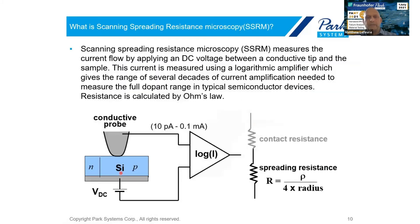On to SSRM. This is much simpler conceptually and theoretically than scanning capacitance. We're simply bringing a conductive probe into contact with the sample, applying a DC bias between the two, and measuring the current that flows. In SSRM, it should be noted that we use a logarithmic amplifier, because since there can be such a large range in doping concentration, the current values you can measure are widely variant.